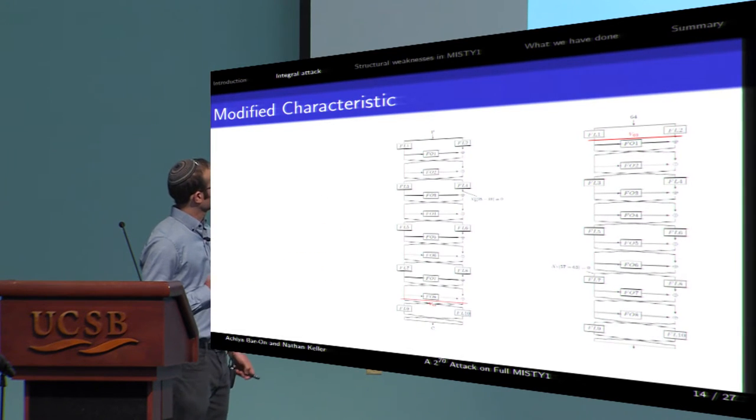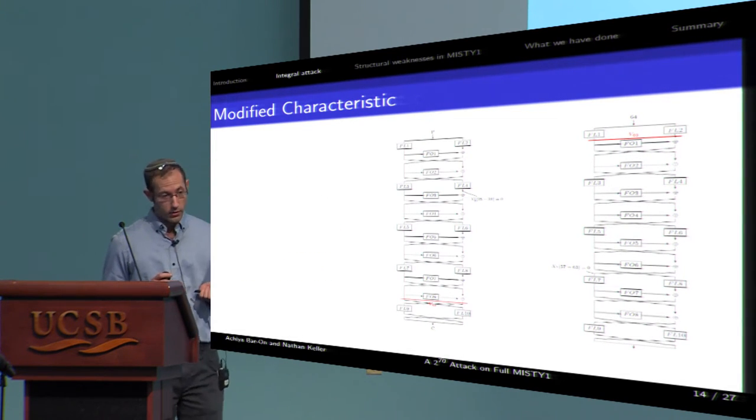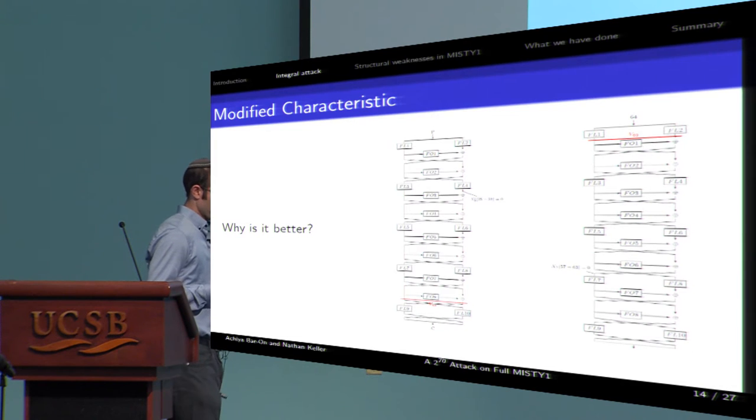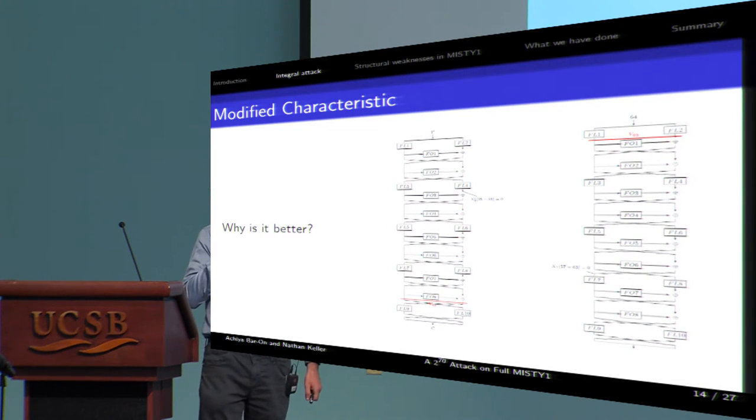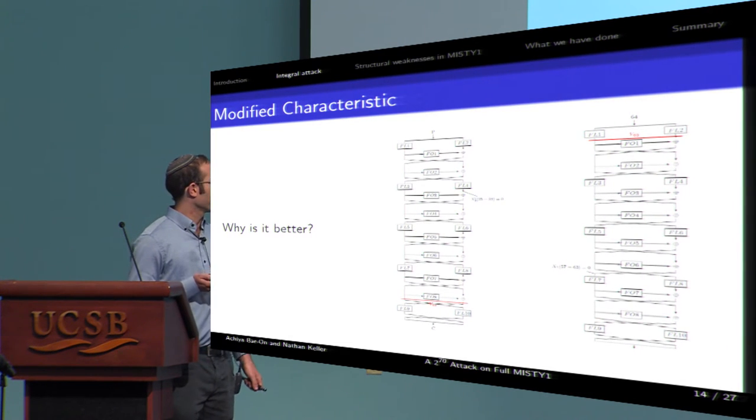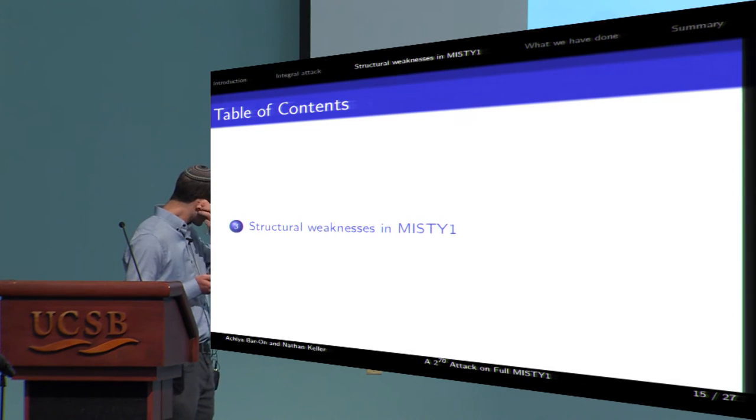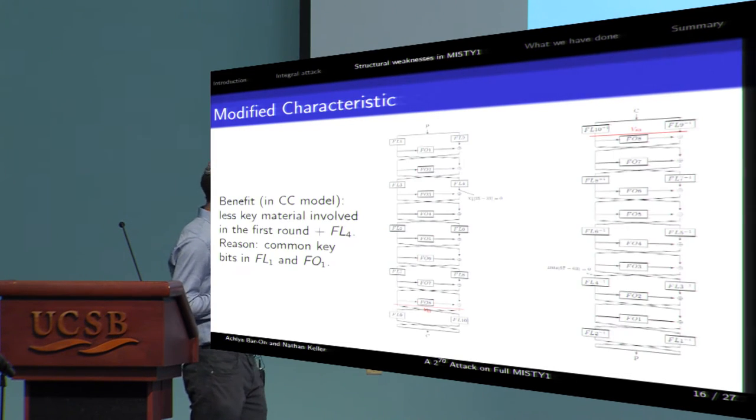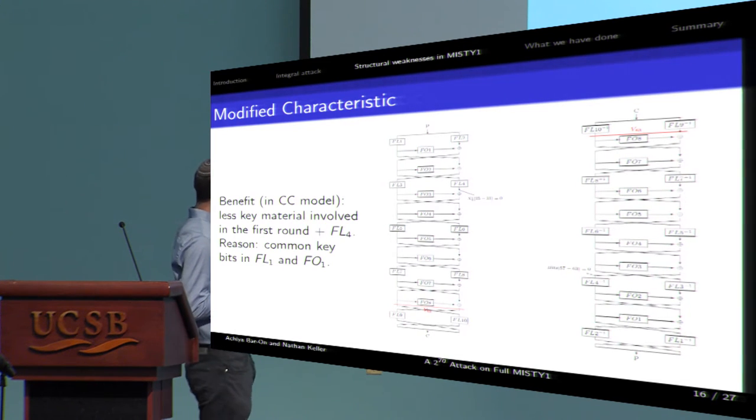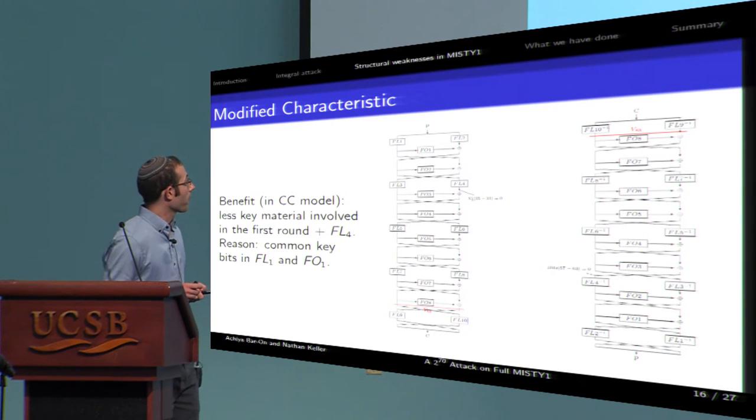Here is a better picture, drawn on the same picture. So, both characteristics look the same, and the question is, what is the advantage of the modified characteristic? We think the answer is one of the weaknesses of MISTY-1 design. And the answer is simple. There are common key bits in the first round, in FO1 and FL1. So, less key material is needed to guess for checking whether the attack equation holds.